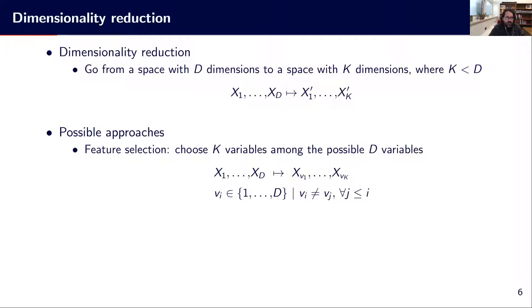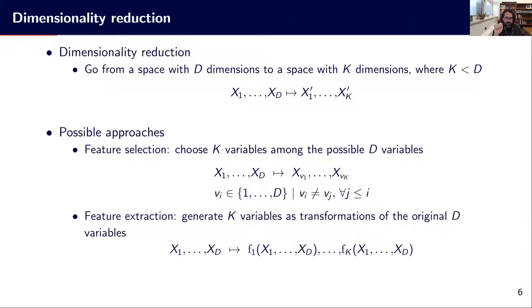There are two main approaches for that. The first one is feature selection, where the idea is to choose k variables among the possible d variables. We pick directly a subset of k from d and use this as our new feature subset. Compared to feature extraction, where we apply a transformation that goes from d dimensions to k dimensions, and each transformed feature will be a function of all the original variables in d dimensions.